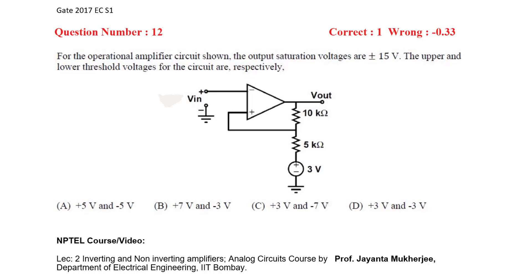This question is from GATE 2017 EC Session 1. For the operational amplifier circuit shown, the output saturation voltages are plus or minus 15 volts. We need to find the upper threshold voltage and the lower threshold voltage.